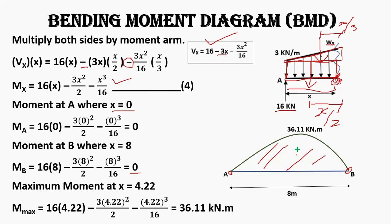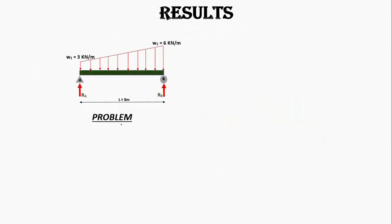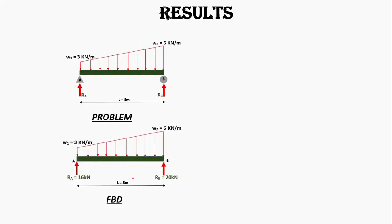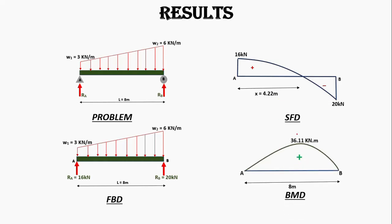You can use these formulas for trapezoidal loading on a simply supported beam: for reactions RA and RB use the two provided formulas, for Wx use the given formula, and these are the general shear force and bending moment equations. The results summary: RA = 16 kN, RB = 20 kN, with the free body diagram, shear force diagram, and bending moment diagram showing a maximum bending moment of 36.11 kN·m.